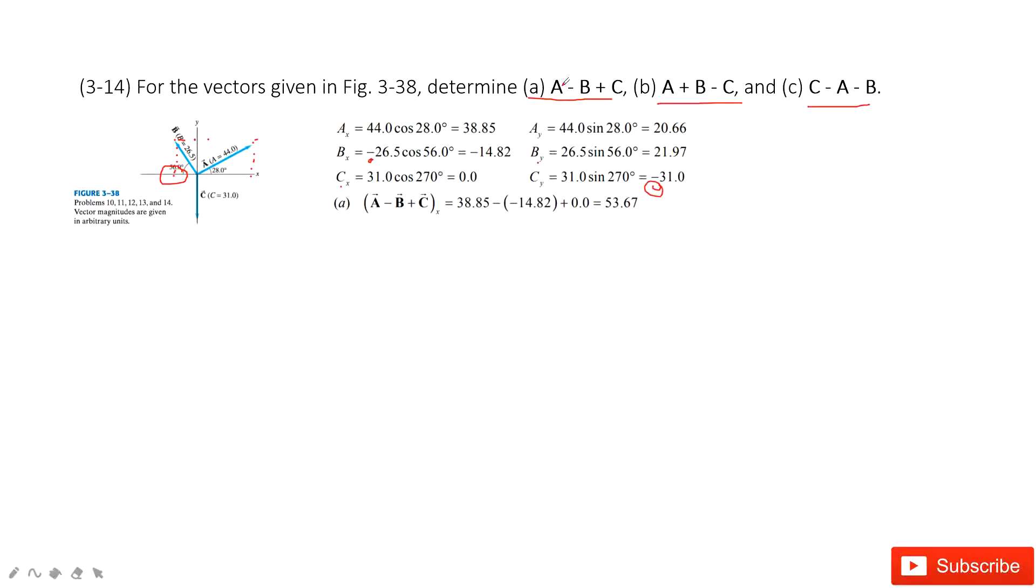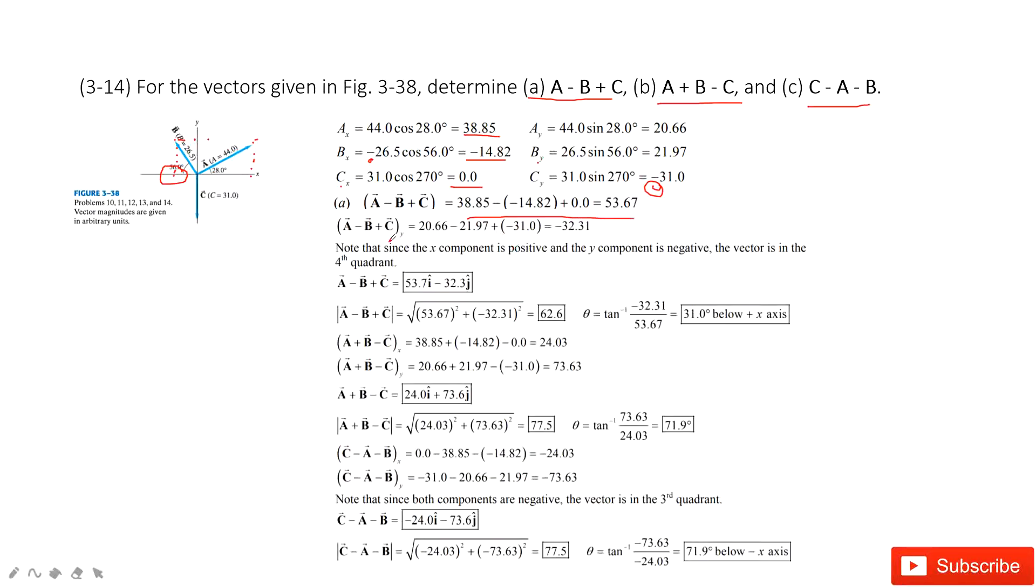The first one, we do the calculation a subtract b plus c. First thing, we look at the x component. So we do calculation for x component is ax subtract bx plus cx. And then, the y component is similarly, ay subtract by plus cy. Now we get the x component and the y component of this vector.